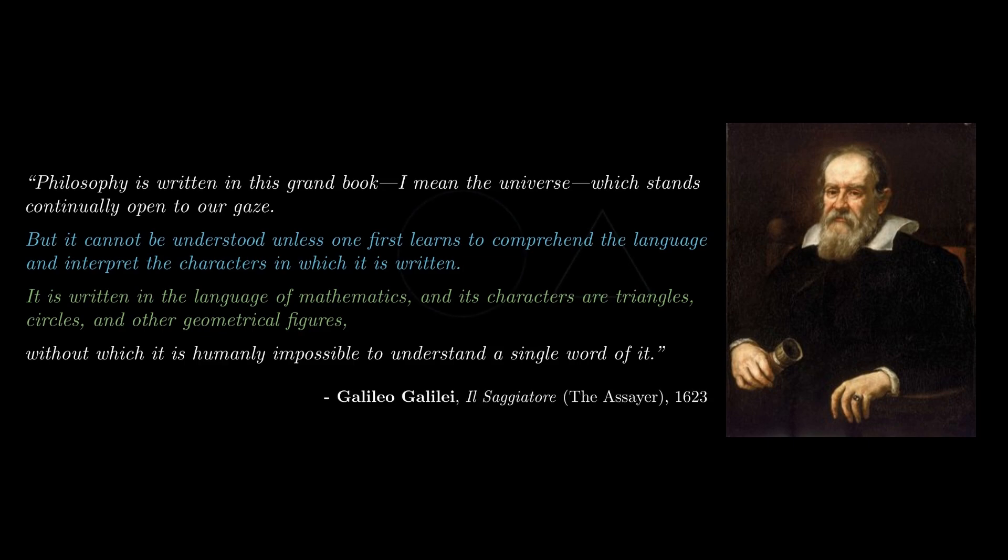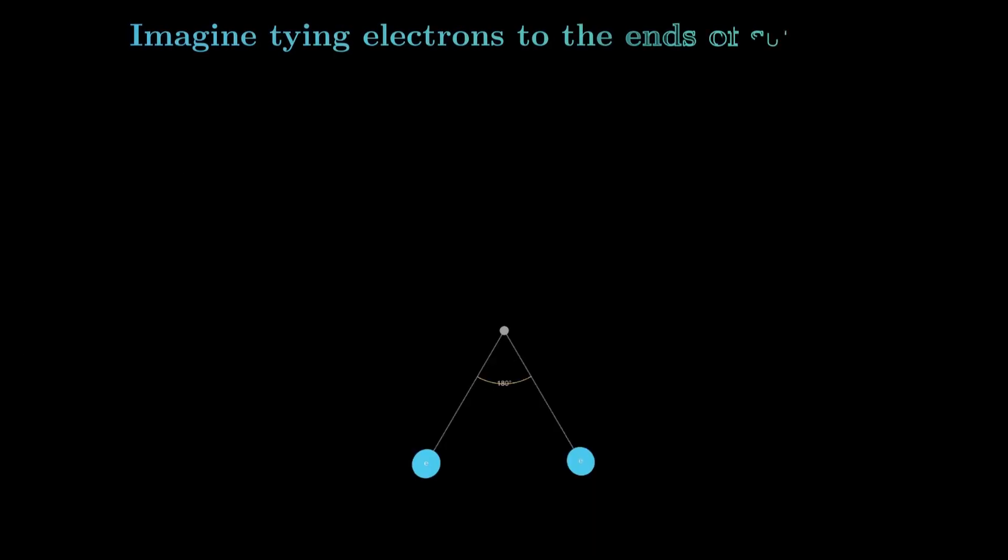Let's play a game. Imagine you tie two electrons to the ends of a string and gently release them. Like charges repel and they fly apart in opposite directions, settling 180 degrees apart along a straight line. What if you connect three electrons with strings and let go? This time they arrange themselves into a perfect equilateral triangle, each one spaced exactly 120 degrees from the others.